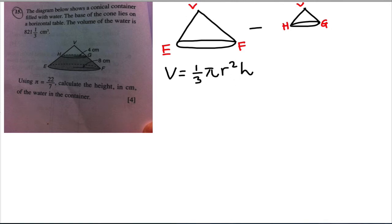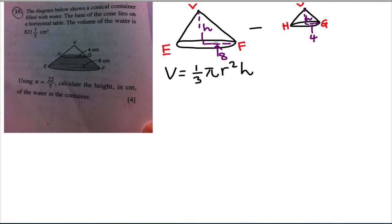For the bigger cone, the radius is given as 'a' and the height we do not know, so I'll call it h. For the smaller cone, the radius is given as 4 and the height is also not given. So we need to recognize that both cones form similar triangles, and we'll use the similar triangle method to find h.